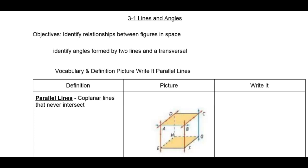Welcome. We are on to Chapter 3, Lines and Angles. This first section is Lines and Angles, and we are going to be identifying relationships between figures in space and also identifying angles formed by two lines and a transversal.